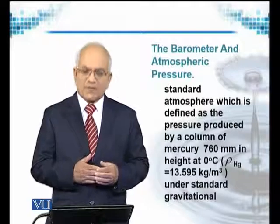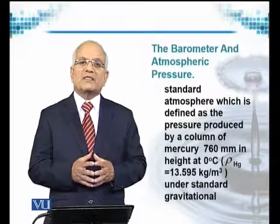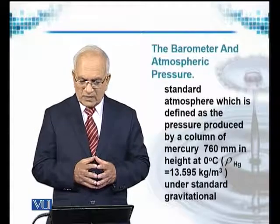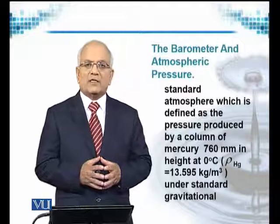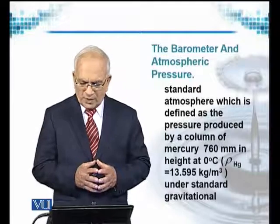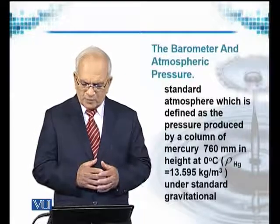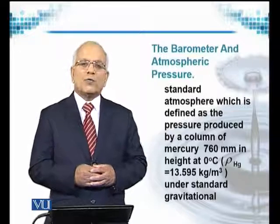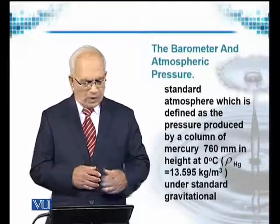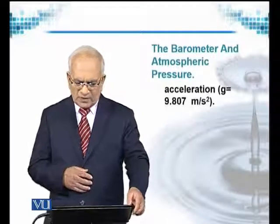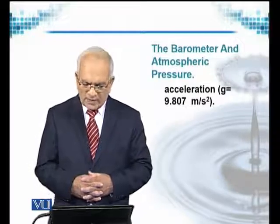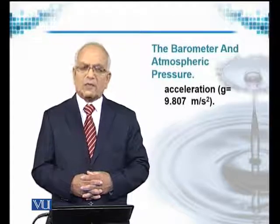We know that with temperature the density changes — it changes not much for liquids but for gases. At very large vertical heights, the density may significantly change, and therefore standardization is necessary. The standard atmospheric pressure corresponds to 760 mm of mercury at zero degrees centigrade, where the density of mercury is taken to be 13,595 kilograms per meter cubed under standard gravitational acceleration, where g equals 9.807 meters per second squared.